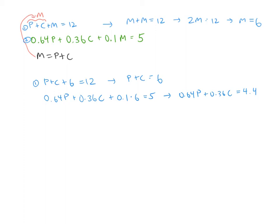So that simplifies a little bit here. Now from the new first equation, I can actually rewrite this to solve for P in terms of C, and I can plug that into the second equation: 0.64 times six minus C plus 0.36C equals 4.4. That simplifies to the following.